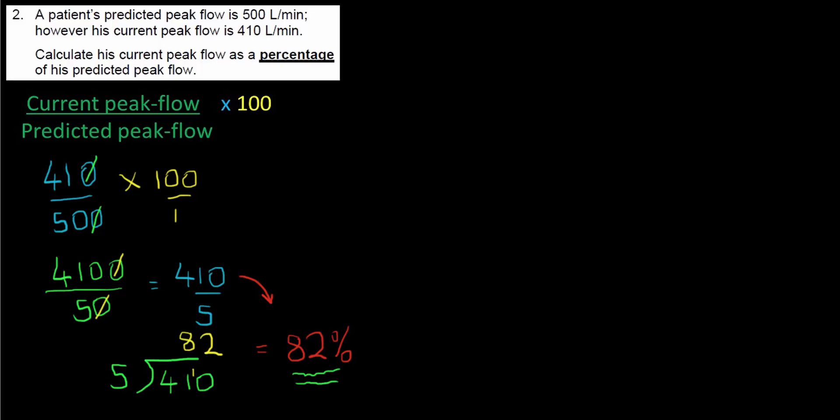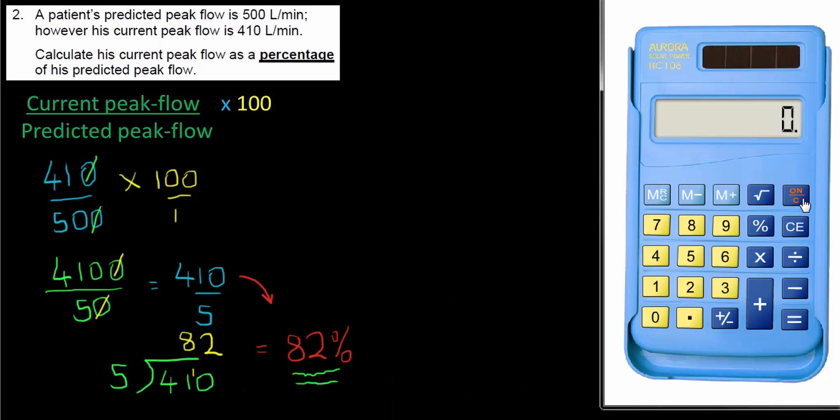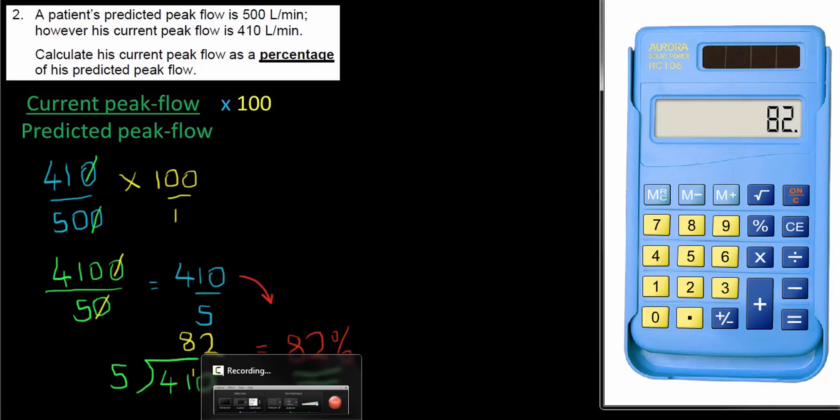Let's check with the calculator. Clear the memory. Now when I unpacked the question with the formula, I had 410 divided by 500 multiplied by 100 divided by 1. And sure enough, our answer comes out to be 82 percent. Good stuff. On to question 3.